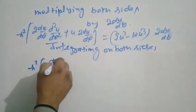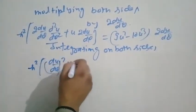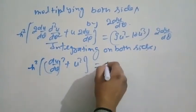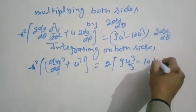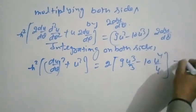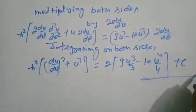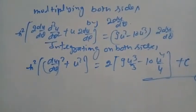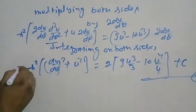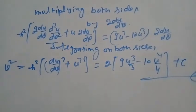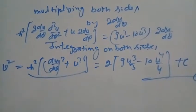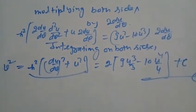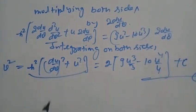After integrating: h² (du/dθ)² plus u² equals (2·9·u³)/3 minus (10u⁴)/4 plus a constant C. This uses the standard integration formula.